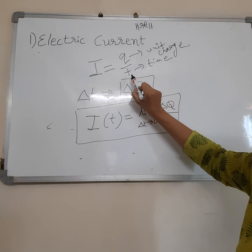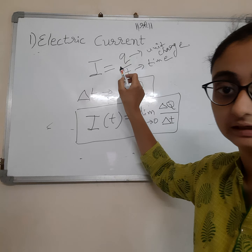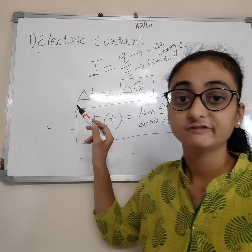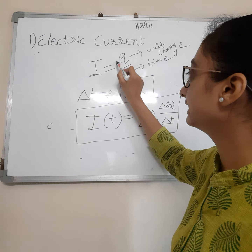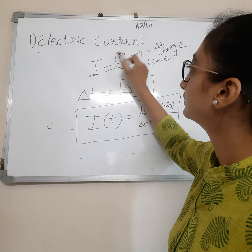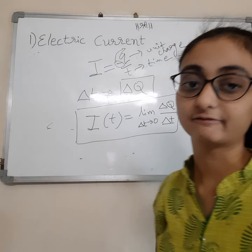Now here we see current I for unit charge Q and time interval T. But this is for steady charge.